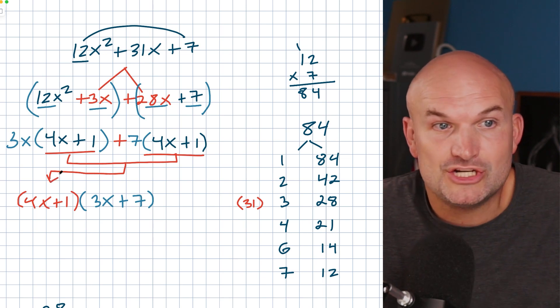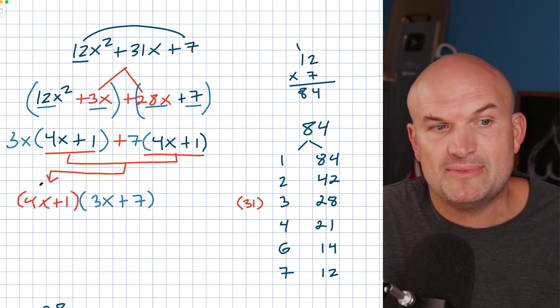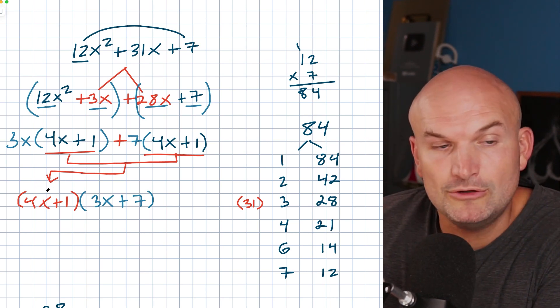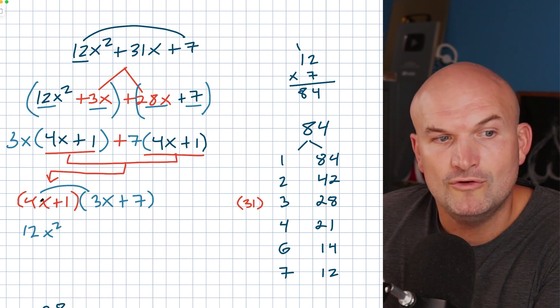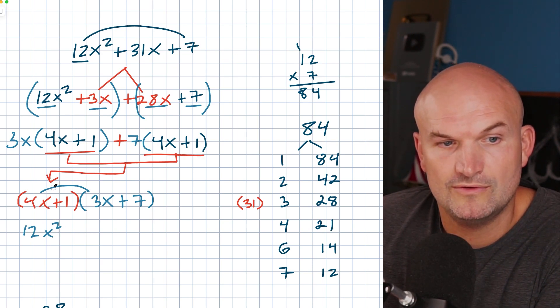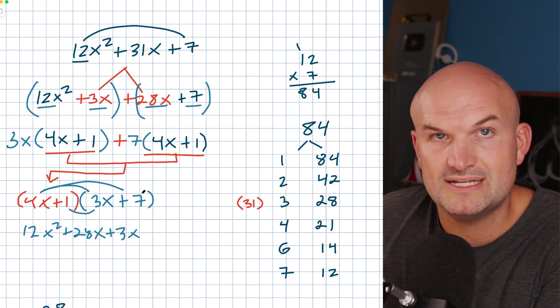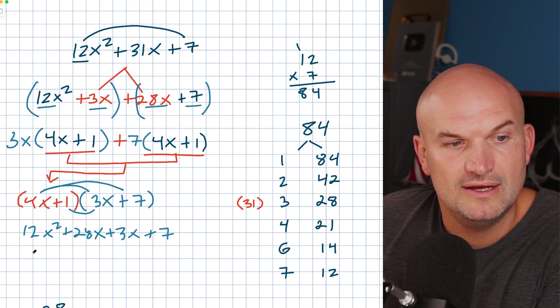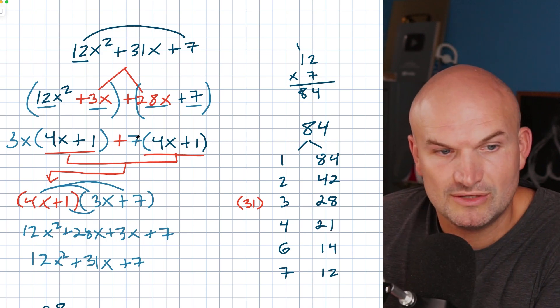Now we have gone ahead and factored this out. And again, remember, you can always check back your work. Like even if you're taking a test and you're like, oh crap, you know, I got to check my work. I don't want to make mistakes. Do a quick little mental check. Like just multiply everything back out to make sure that you did it correctly. 4x times 3x is 12x squared. 4x times 7 is going to be 28x. Three times one is going to be 3x and one times 7 is going to be a positive seven. So therefore that's 12x squared plus 31x plus 7. And voila, that's exactly the answer we're looking for.